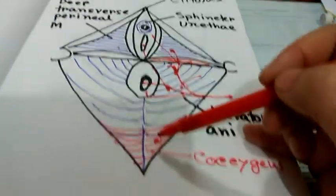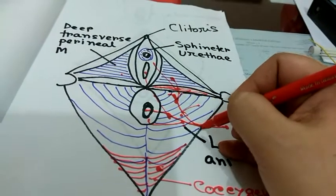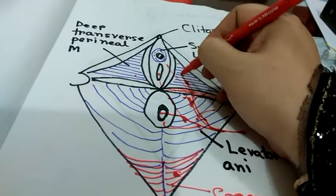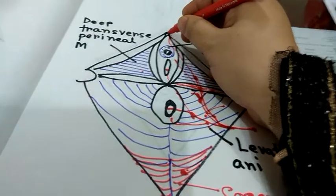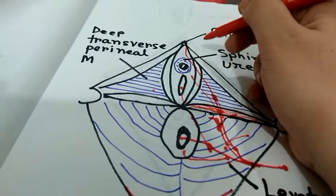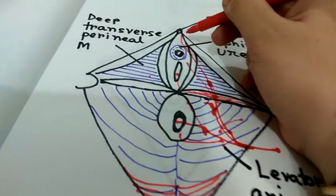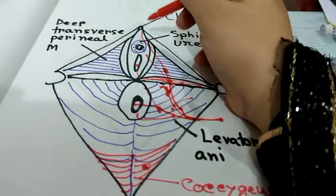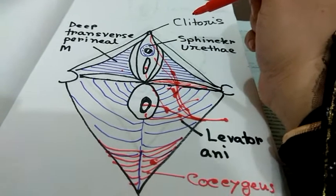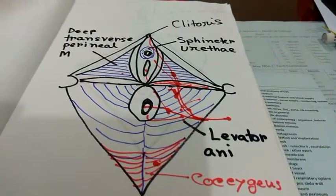The last branch of the pudendal nerve is the dorsal nerve of the clitoris in females, or the dorsal nerve of the penis in males. These are purely sensory nerves. That is all about the pudendal nerve. If you like this video, please press the like button and subscribe to my channel. Thank you.